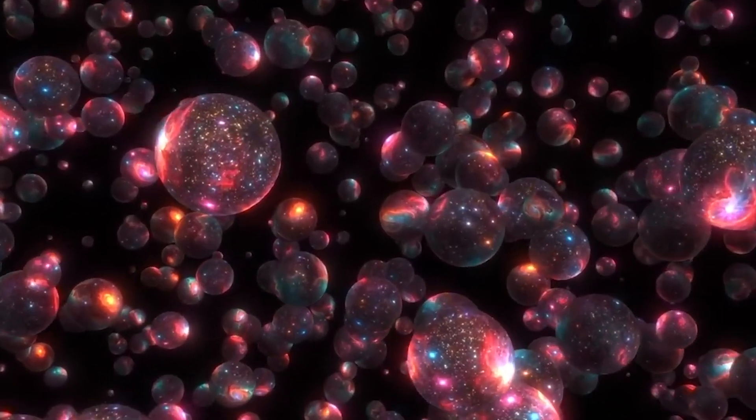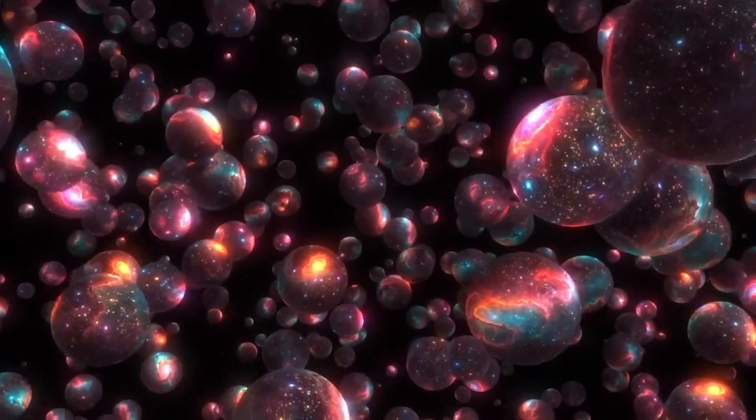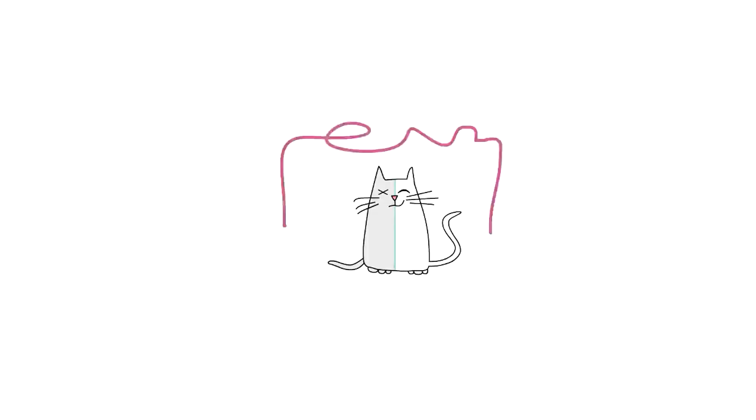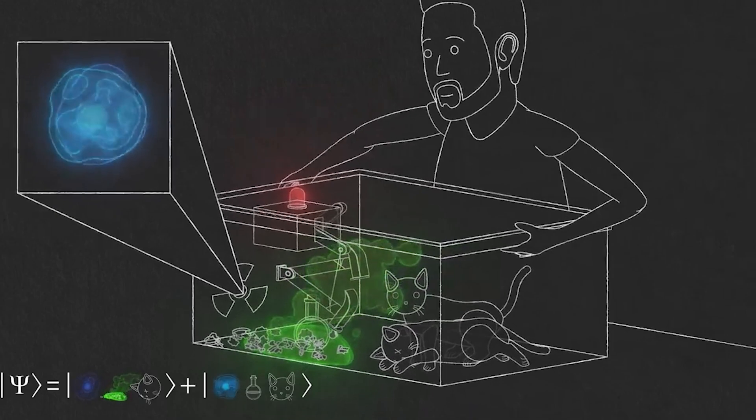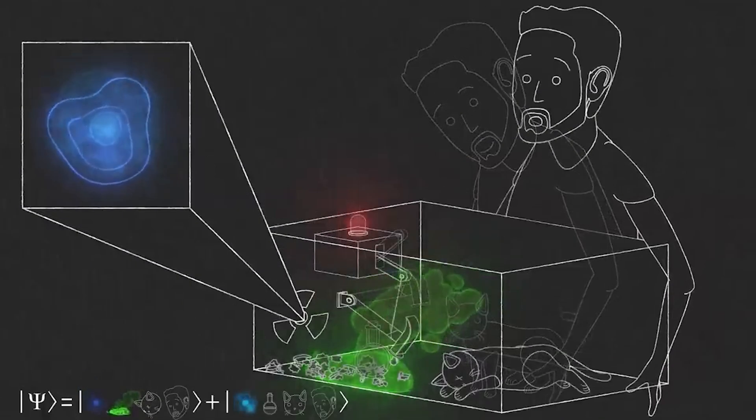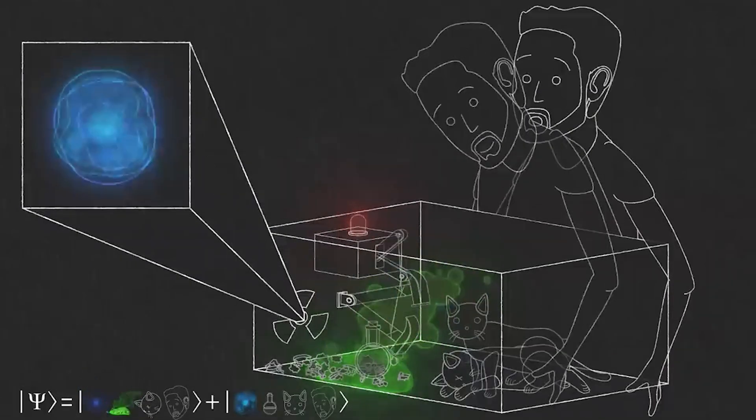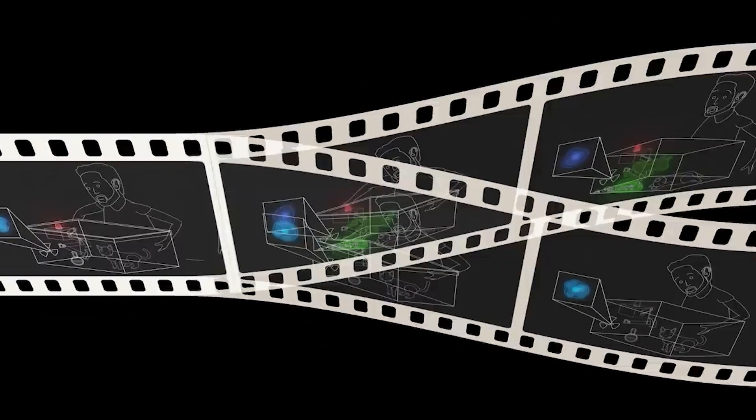Applying the many-worlds interpretation to Schrödinger's cat provides a unique solution to the paradox. Instead of imagining the cat as being both alive and dead in the same reality, the theory suggests that each possibility plays out in a different universe. In one version of reality, the observer opens the box and finds the cat alive. In another version of reality, they open the box and find the cat dead. Unlike the Copenhagen interpretation, which states that observation determines reality, the many-worlds theory suggests that both outcomes happen, but in different universes.